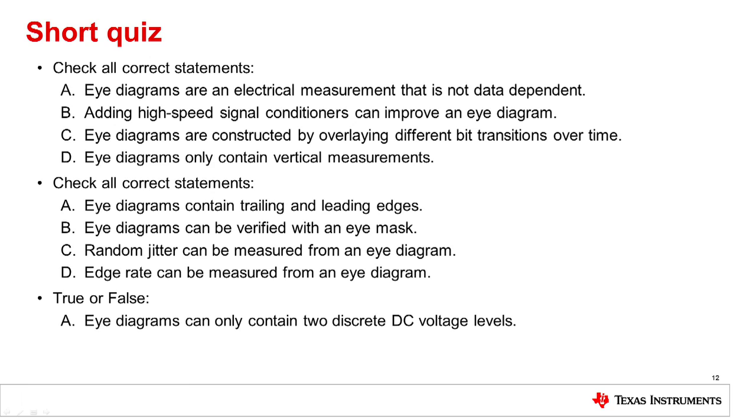To refresh your mind on what we discussed, let's go over a short quiz. Check all correct statements. A. Eye diagrams are an electrical measurement that is not data dependent. B. Adding high speed signal conditioners can improve an eye diagram. C. Eye diagrams are constructed by overlaying different bit transitions over time. D. Eye diagrams only contain vertical measurements. The correct answer is B and C.